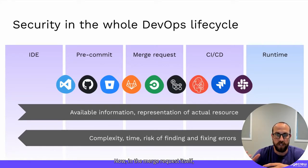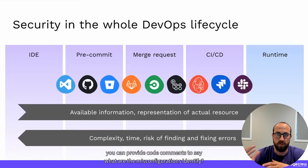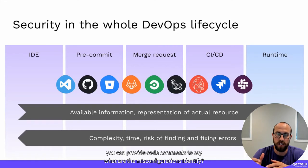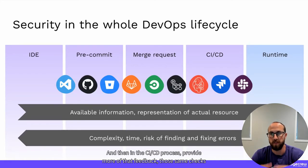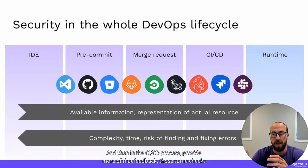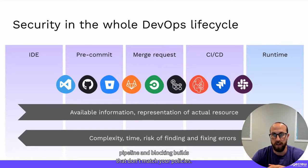In the merge request itself, you can provide code comments identifying what misconfigurations were found. Then in the CI/CD process, you provide those same checks in the build and deployment pipeline, blocking builds that don't match your policies.